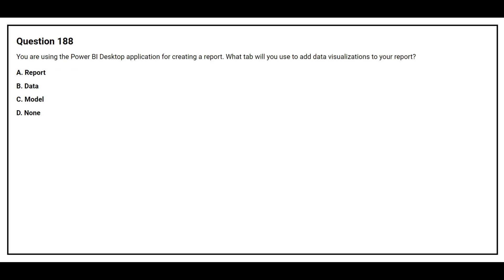Question number 188. You are using the Power BI Desktop application for creating a report. What tab will you use to add data visualization to your report? Option A: Report. Option B: Data. Option C: Model. Option D: None. The correct answer is Option A: Report.